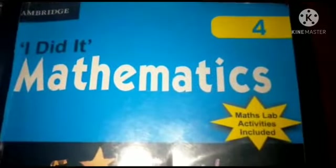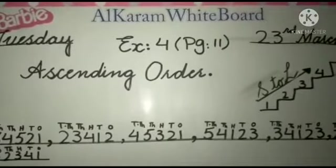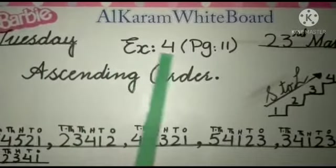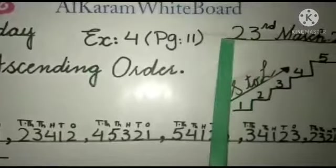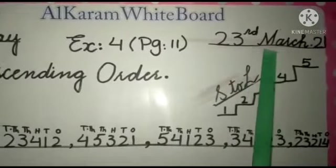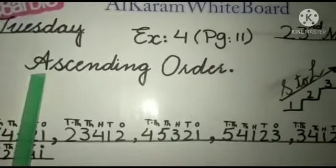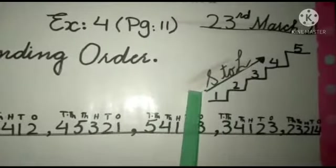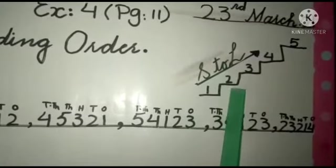Assalamu alaikum, dear students. I welcome you to your maths lesson, Unit 2, Numbers, Exercise 4, page number 11. It's Tuesday, the 23rd of March 2021, Pakistan's Resolution Day. Our topic is ascending order. Ascending order means to arrange the numbers from smallest to largest.